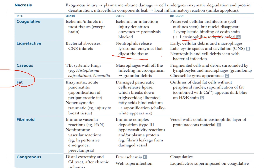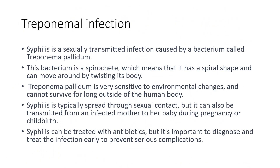The last type is gangrenous necrosis, usually seen in the feet, legs, and arms — more often in legs. It is seen in distal extremities and the GI tract after chronic ischemia. Dry gangrene is due to ischemia, and wet gangrene is due to superinfection. The physiology is like coagulative overlapping with liquefactive.